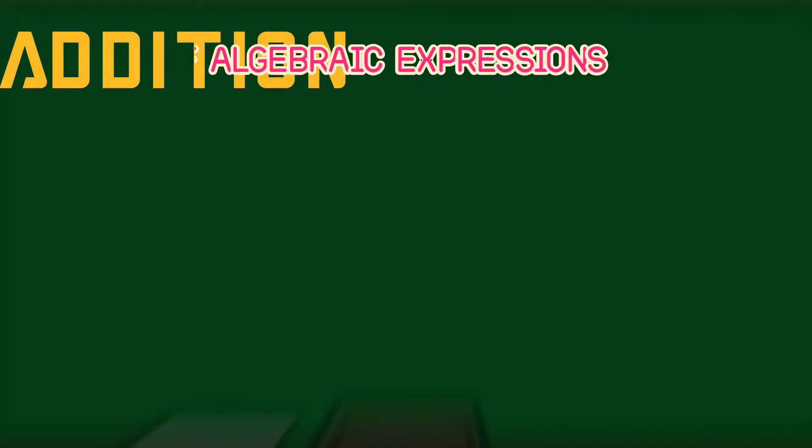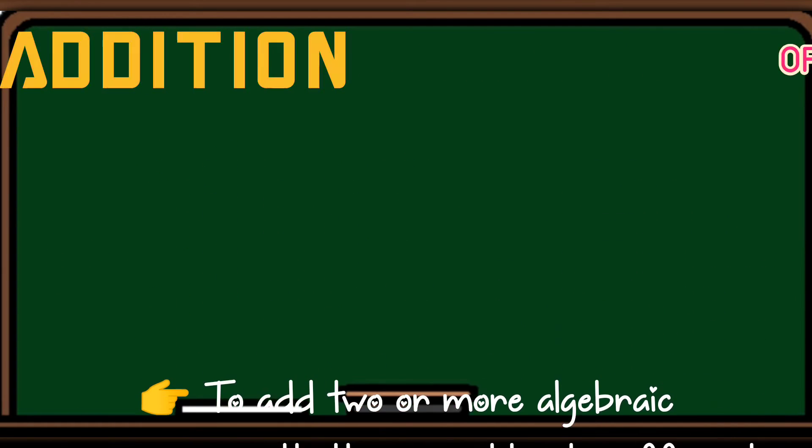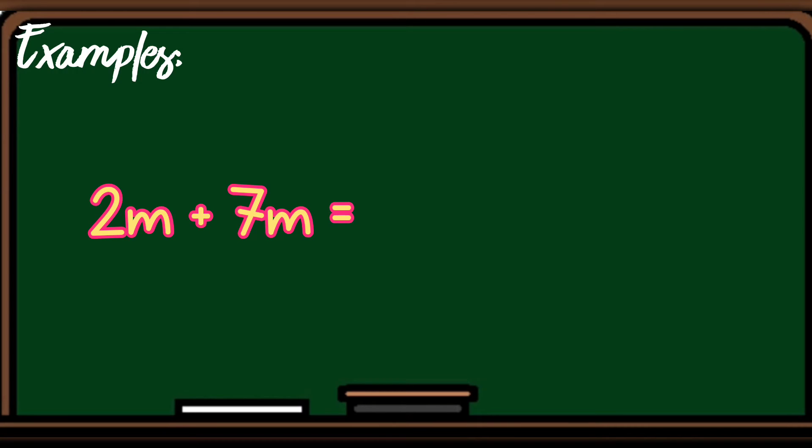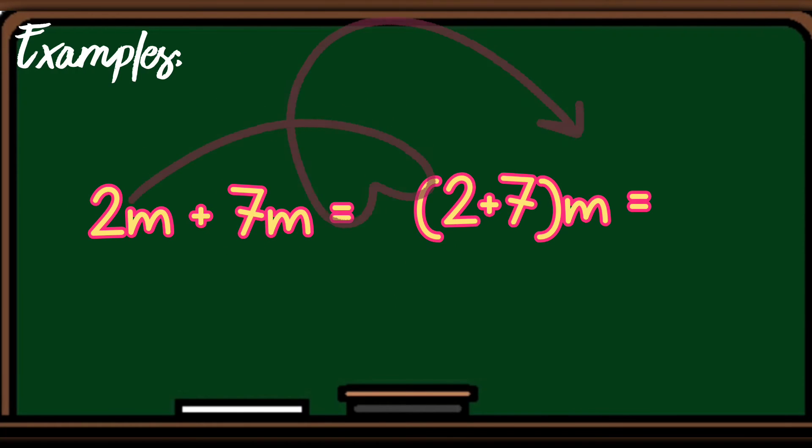Addition of algebraic expressions. To add two or more algebraic expressions with the same literal coefficient, add only their numerical coefficient and affect the literal coefficients. Examples, 2m plus 7m is equivalent to, pagsamahin mo muna yung dalawang number, so 2 plus 7, then copy the variable m is equivalent to 9m.